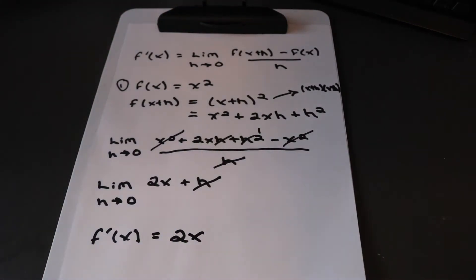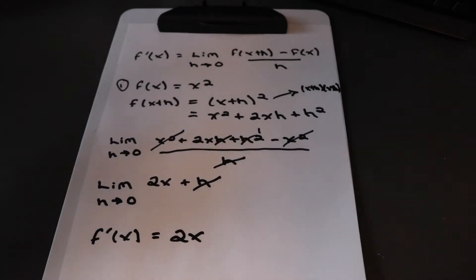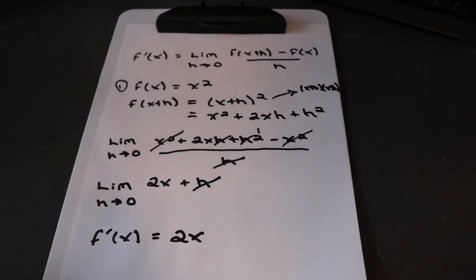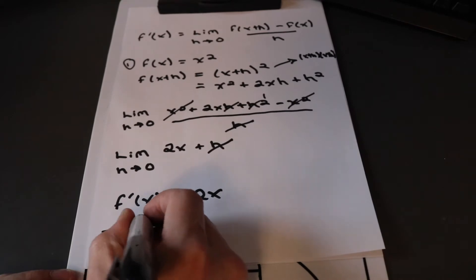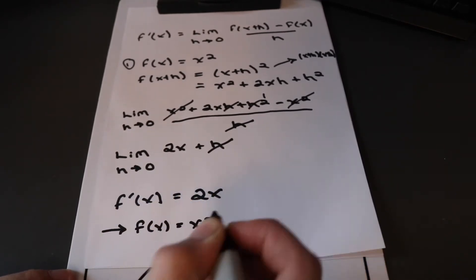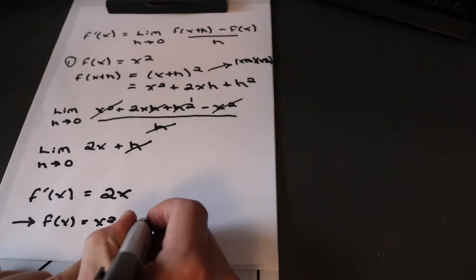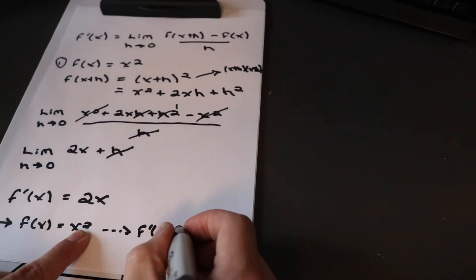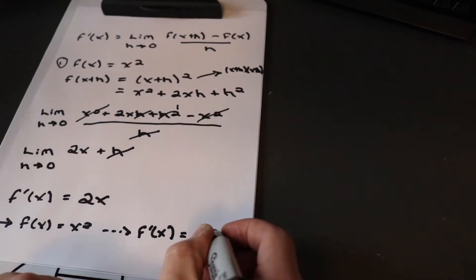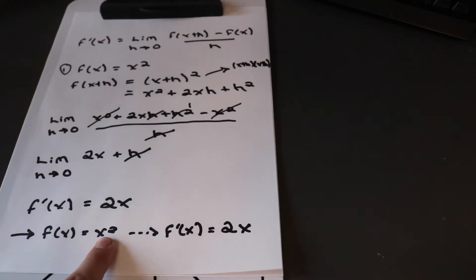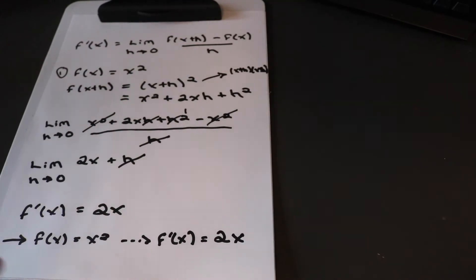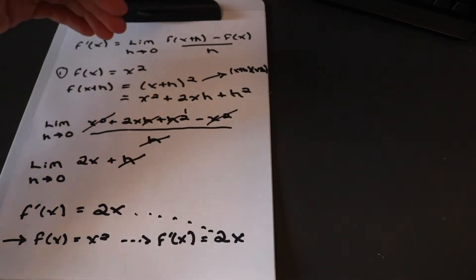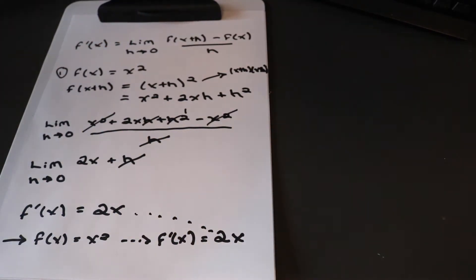In calculus, there's a short form. If f of x equals x squared and we want f prime of x without going through all those steps, the rule is: drop whatever's in the exponent — bring down the 2, keep the x, then subtract 1 from the exponent. That leaves an exponent of 1, so we just write 2x. Both the long form and the short form land at the same result.